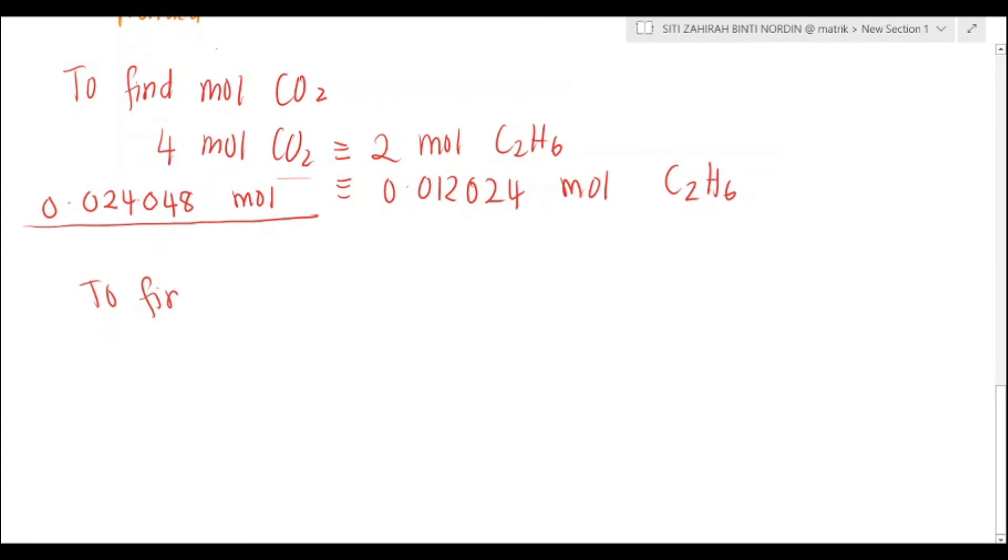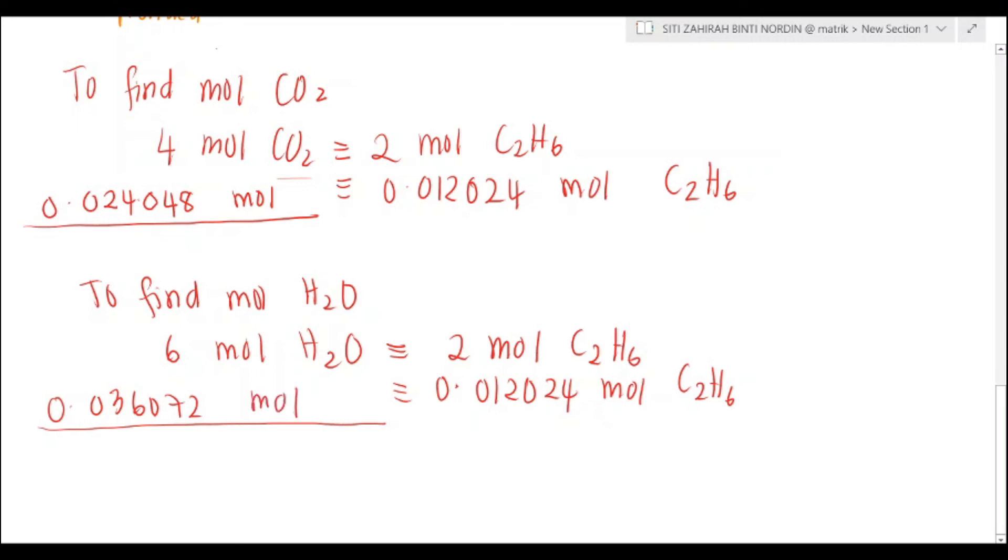Next is to find the mol of water. From equation, 6 mol of water is equivalent to 2 mol of C2H6. So 0.012024 mol C2H6 is equivalent to 0.036072 mol of H2O.